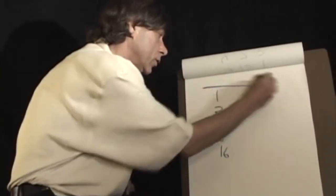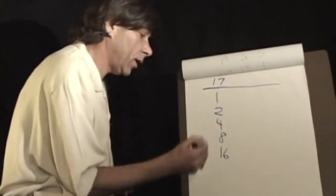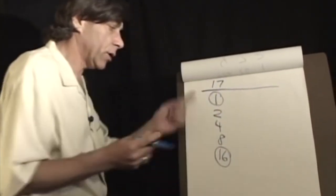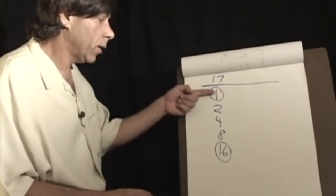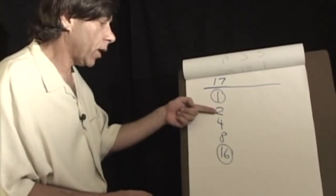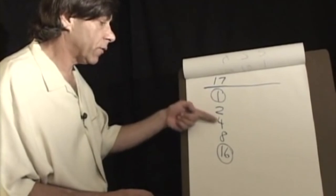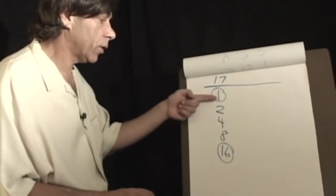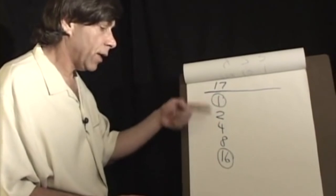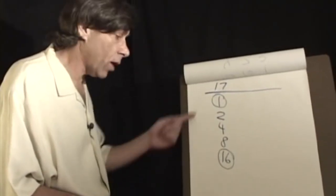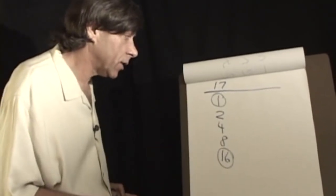For example, if we wanted to choose the number seventeen, that's sixteen plus one. So you can count one, two, one plus two make three, four, one plus four make five, two plus four make six, one plus two plus four makes seven, eight, and so forth. And so any number can be represented by this, the sum of elements of this sequence.